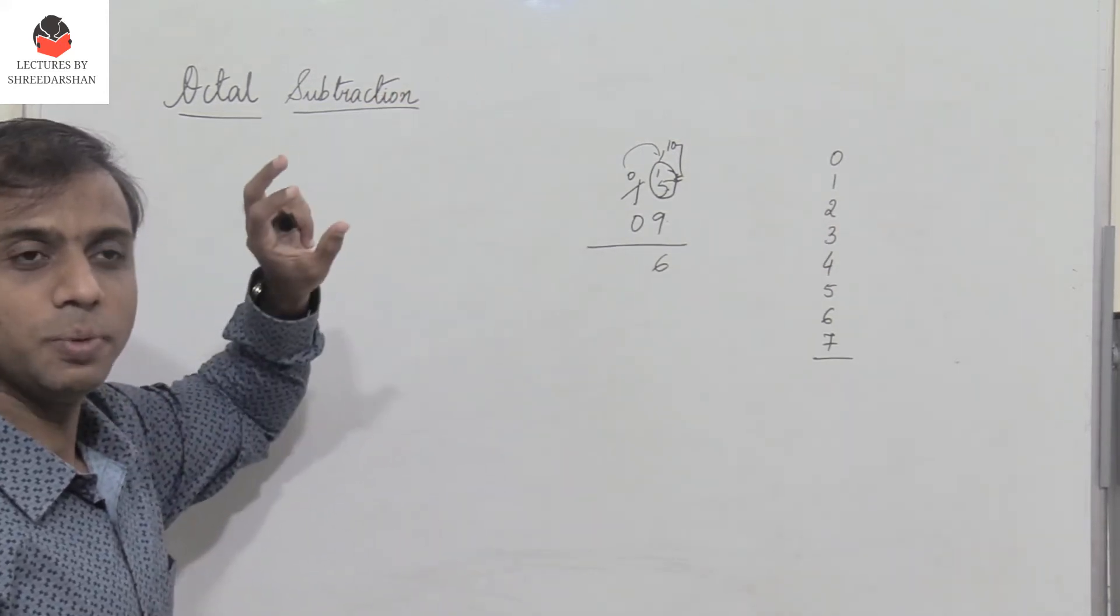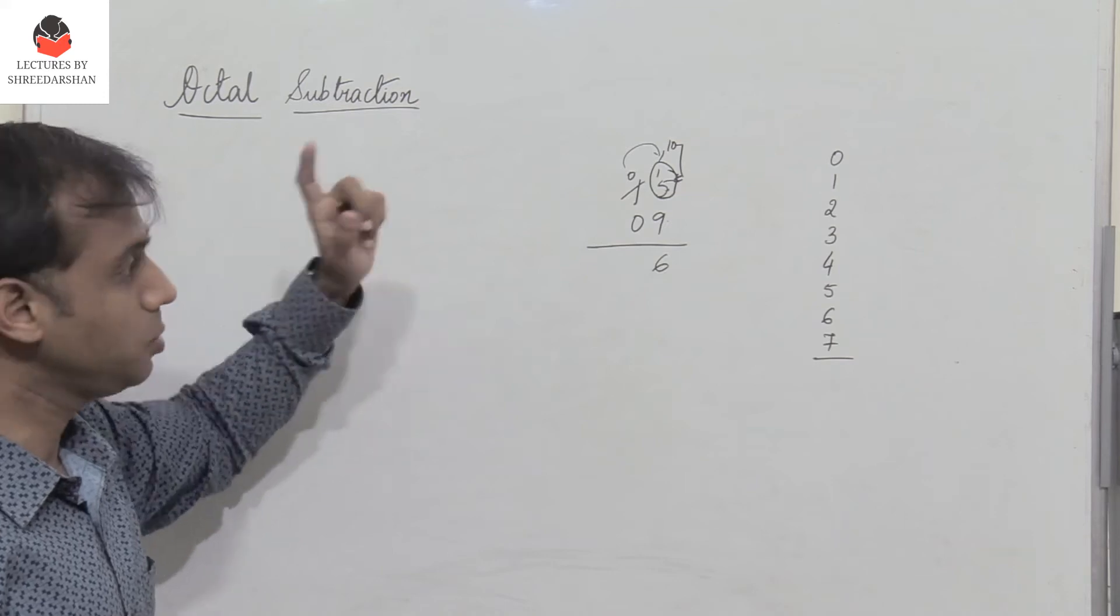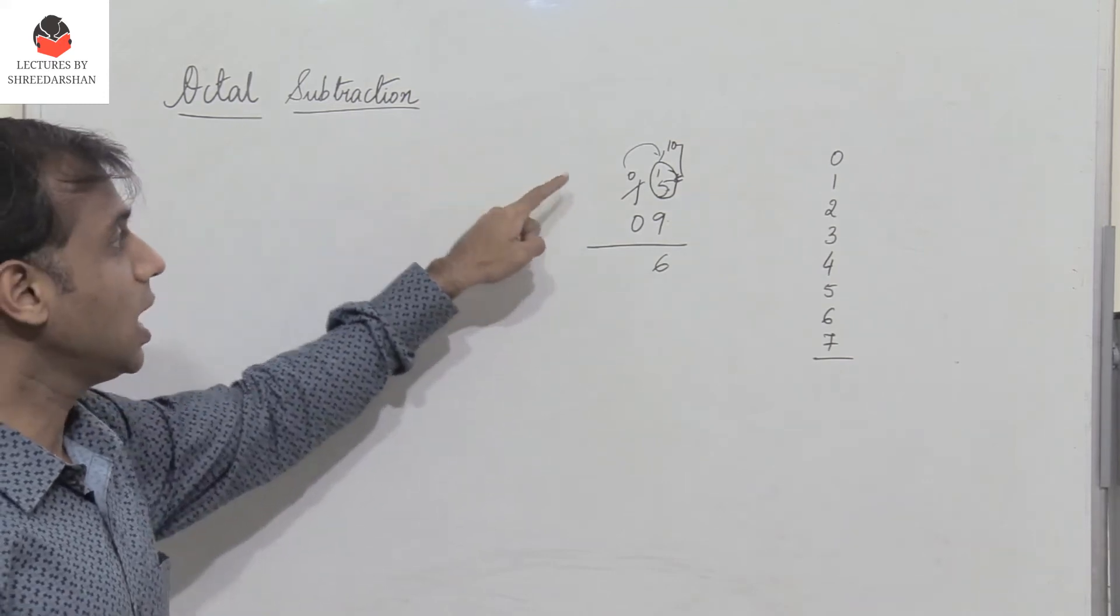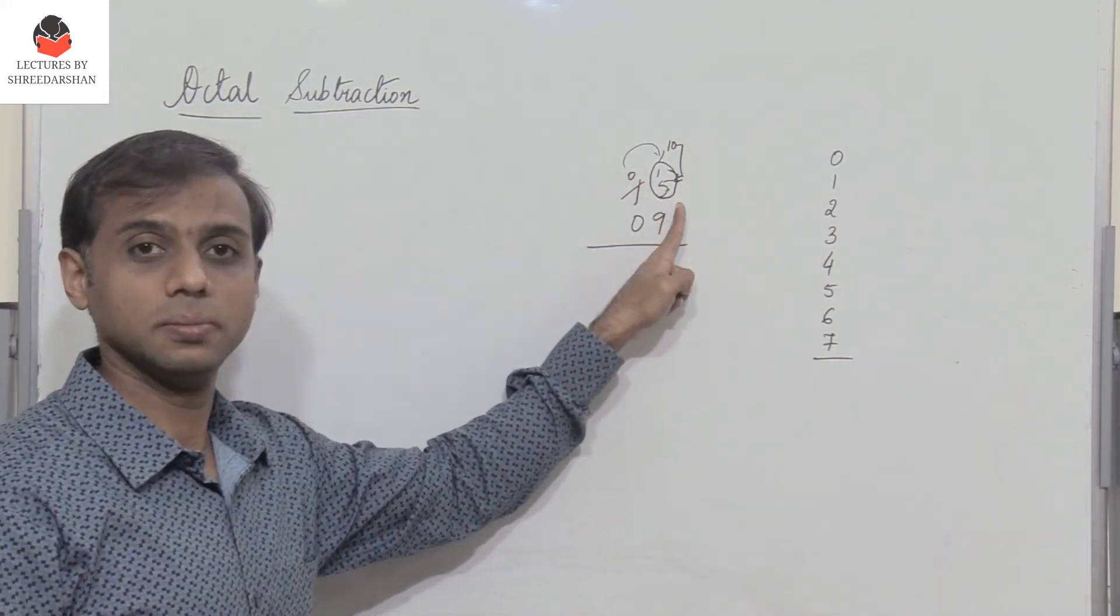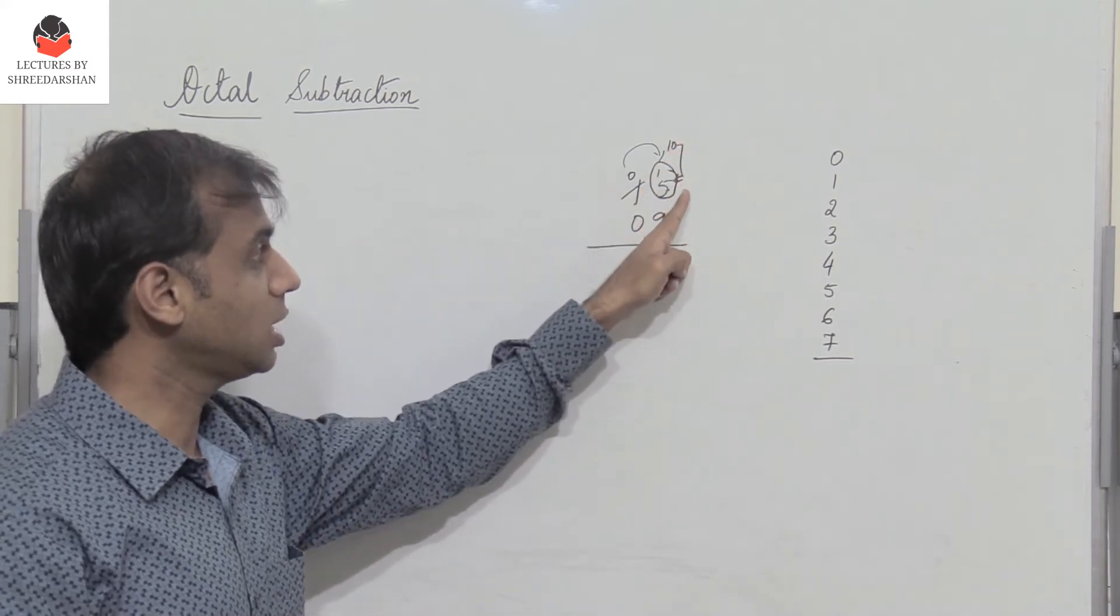Now similarly, when we perform octal subtraction, when we take a borrow, we have to add 8 to the given number. So here in decimal, we add 10 to the given number.